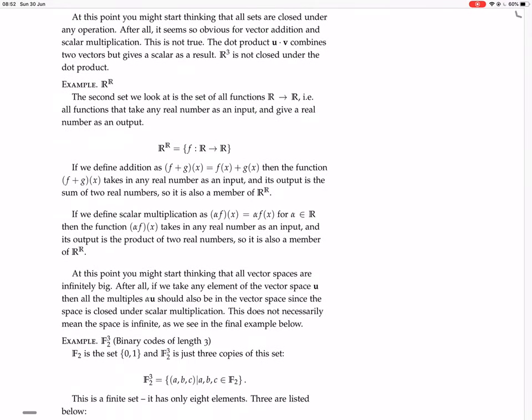Okay, so now we are looking at this example of a vector space R to the R. As a set, it's a set of all functions from reals to reals. So I use all functions to take any real number as an input and give a real number as an output. So you write that as R^R equals f, all those f's from R to R. That's a set.